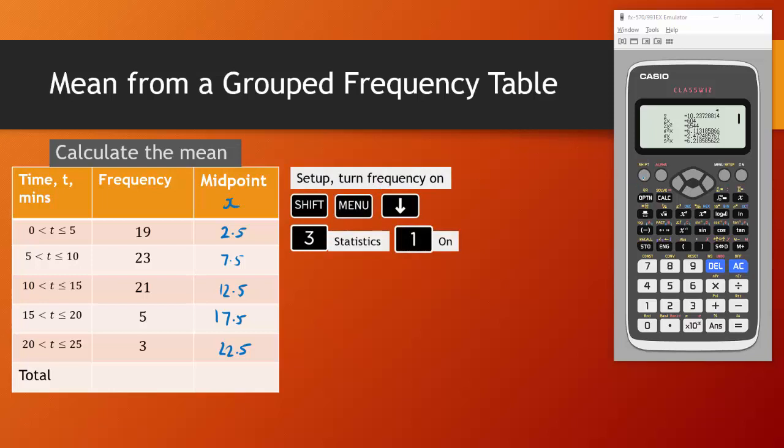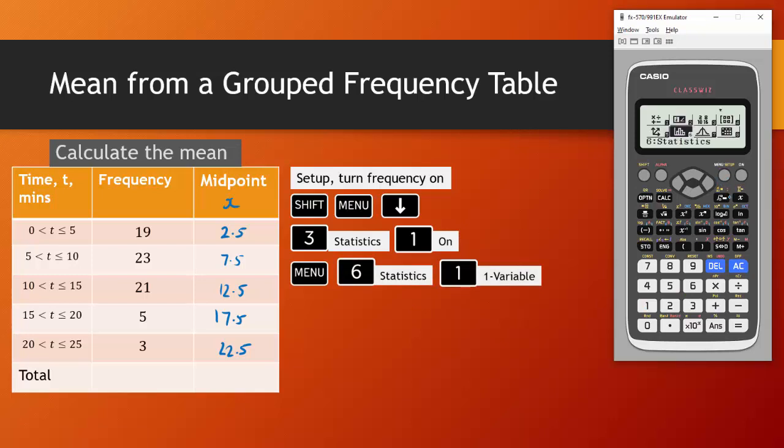So let's get this ready. Go into shift and menu to go into this setup menu. Shift and menu scroll down going to option three for statistics and make sure your frequency is turned on. Next we'll press menu and option six for statistics and we are still doing a one variable calculation. We now need to enter the data so the data that we are going to enter for X is the midpoints here so it's 2.5,